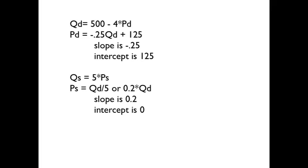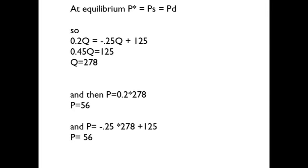We can solve the same thing for the supply function: quantity supplied equals 5 times the price. Solving for price supplied — just divide by 5. The slope is positive and upward because it's the supply curve: as price goes up, quantity goes up. The intercept is 0 on the supply curve — it goes through the origin. We set the supply price equal to the demand price: 0.2Q equals 125 minus 0.25Q, and we can solve that. Once we have the quantity, we can solve for price using either the supply or demand curve. In this case, the price will be about $56.